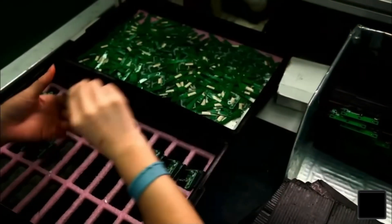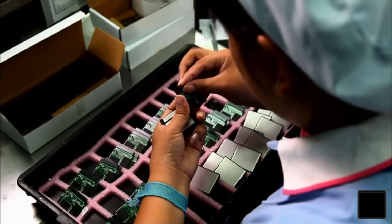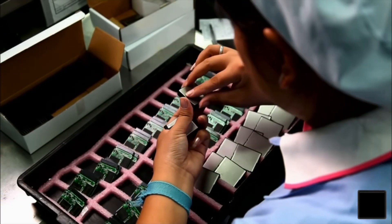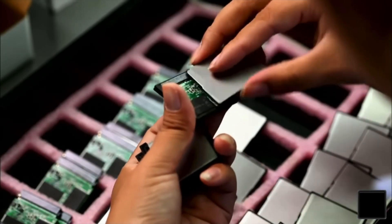After a machine seals the chip in plastic, workers gently snap them apart and insert them in memory card housings. This plastic and metal housing is for a memory card format known as compact flash.